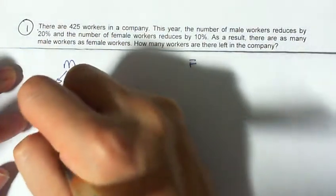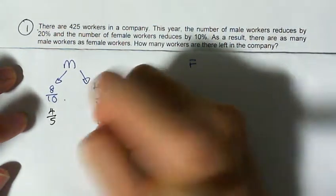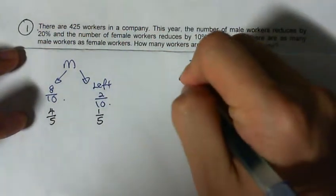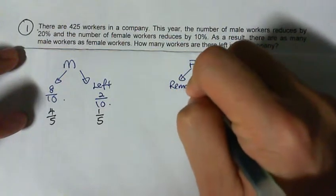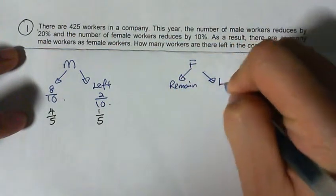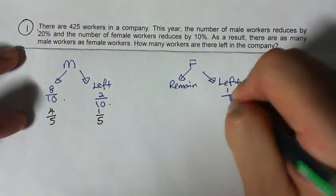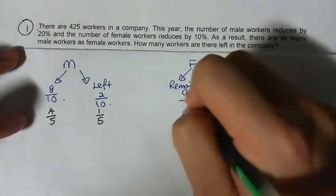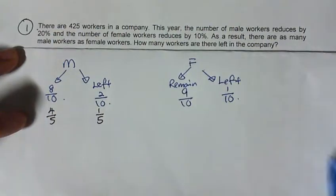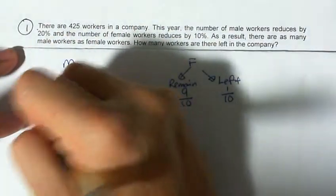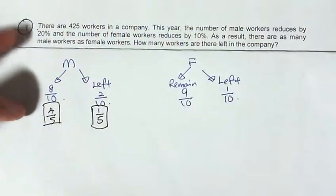Now for female, remain and left. Left is 10%, so 1 out of 10. Remain is 9 out of 10. So I have my fractions. In the first step, I know that 10 over 10 men, or in this case 5 over 5, up to you.